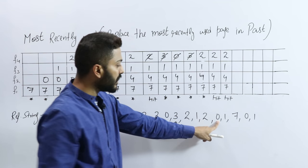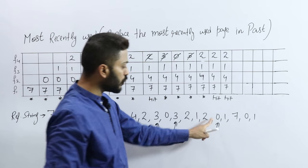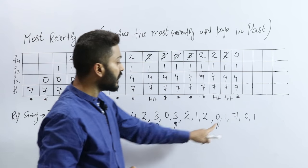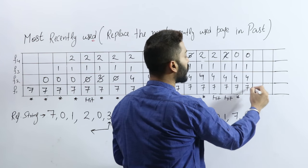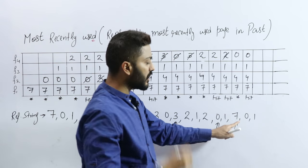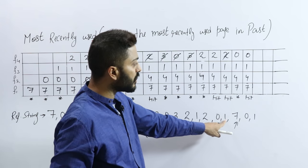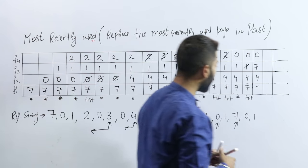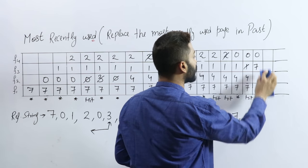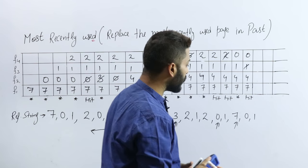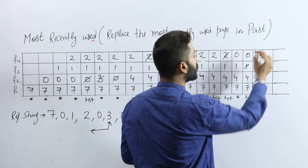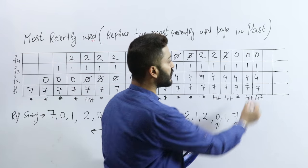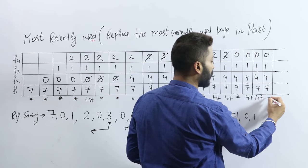Next, page number 0 — is page number 0 present here? No. Next, page number 1 — is page number 1 present? Yes, it is already present — that is a page hit. Next, page number 7 — is page number 7 absent here? No, 7 is already present — that is a page hit. We copy it as-is. Page number 0 — is page 0 present? Yes, it is already present — that is again called a page hit.